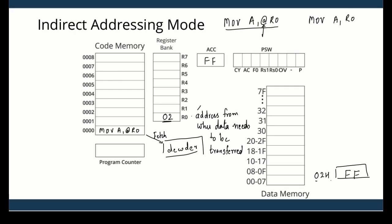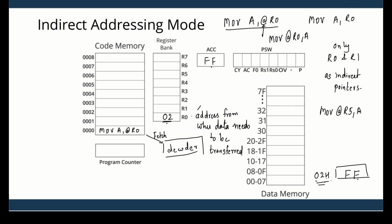The data FFH at address 02H moves into the accumulator. You can also write it the other way: MOV @R0, A — the value in A will be moved to the address that R0 is holding, so the accumulator data goes to address 02H. Importantly, you can only use R0 and R1 as indirect pointers. For example, MOV @R5, A is wrong — you cannot use R2, R3, R4, R5, R6, or R7 as indirect pointers.